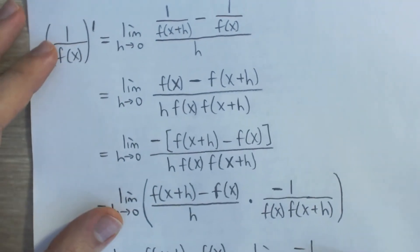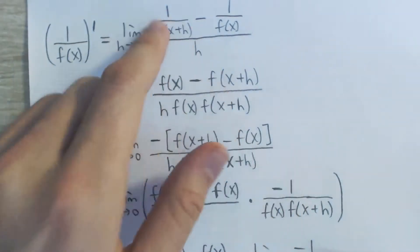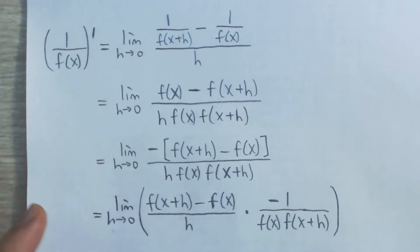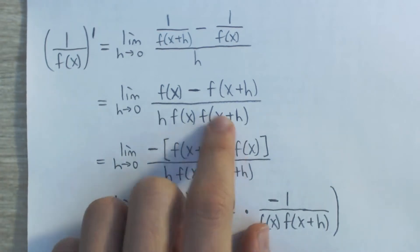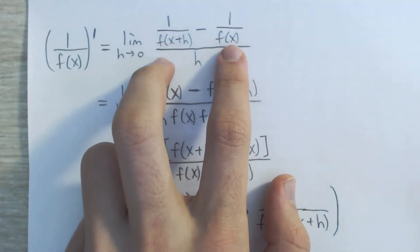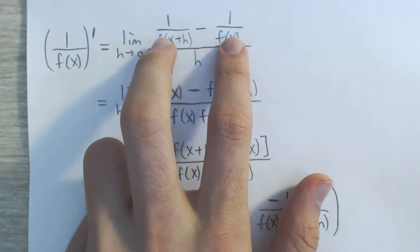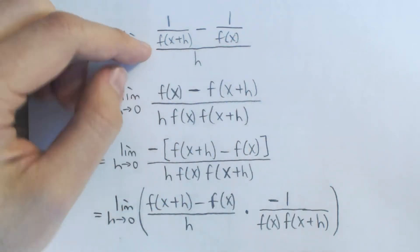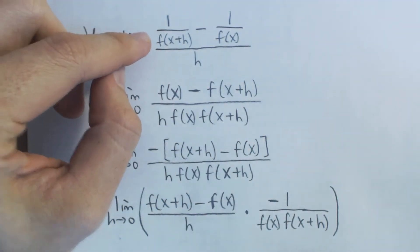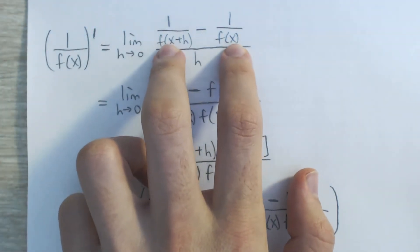What we want to do is multiply both numerator and denominator by f of x and f of x plus h. We're doing this because we want to cancel out both of the denominators in the numerator — f of x plus h and f of x.